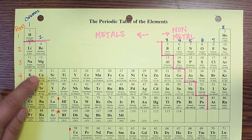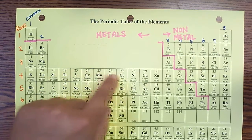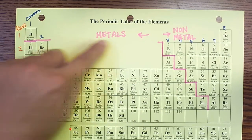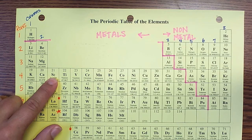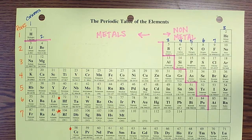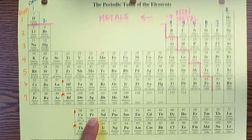Elements one through 20 follow pretty normal electron behavior. But when we get to the 21st electron, it starts to change its energy level, which is why we're not going to go there in biology. When you get to a chemistry class, you will most definitely learn the funky things that happen in the transition metals and down in the bottom rows.